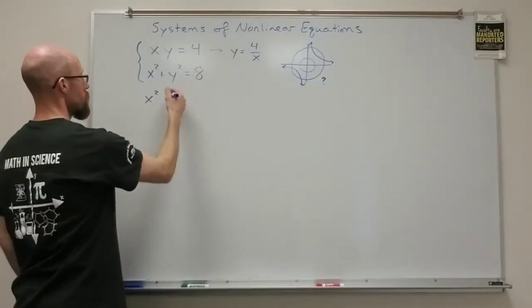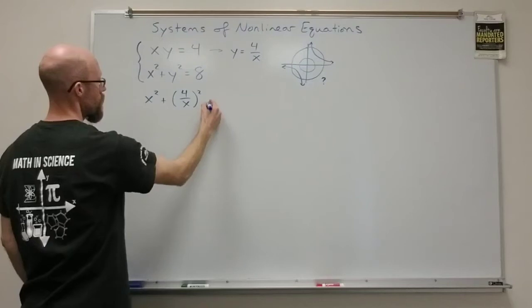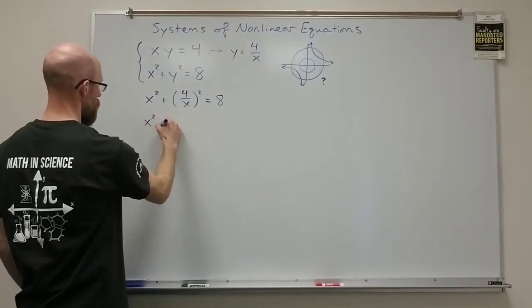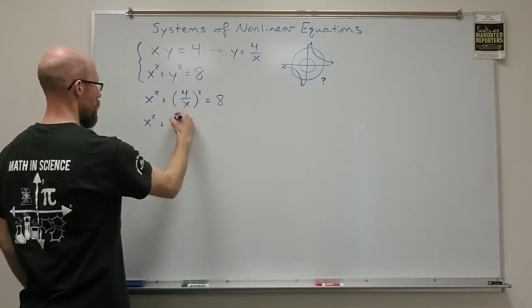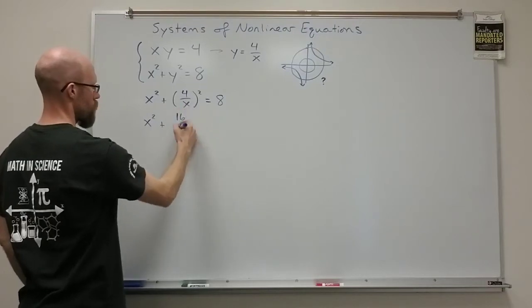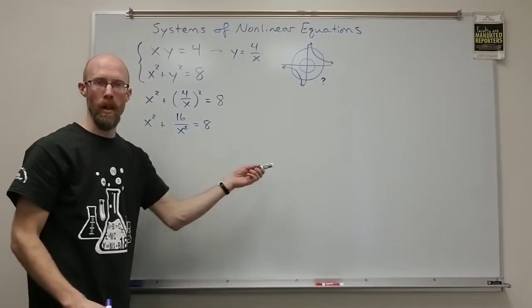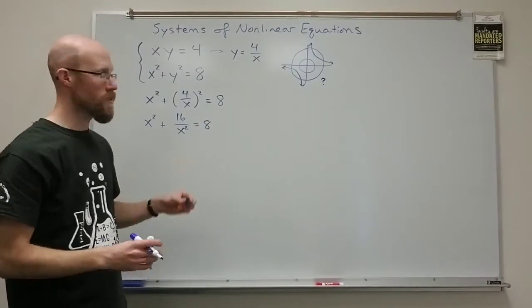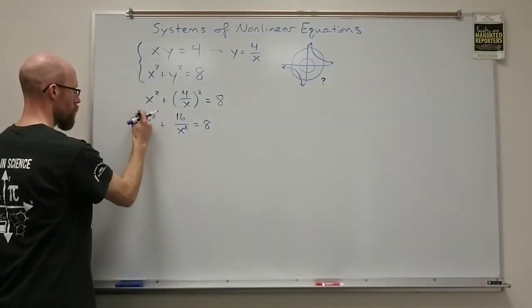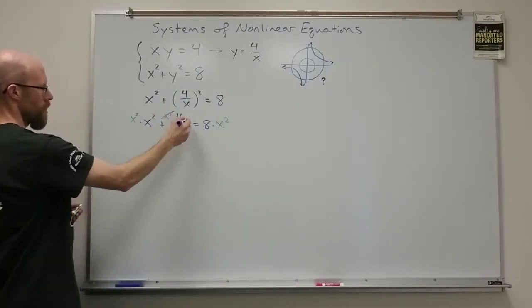So, I'm going to use substitution. I get x squared plus the y becomes 4 over x all squared. If I square that term, x squared plus 4 squared is 16, the x squared is x squared. And then to get rid of the denominator there, I'm going to multiply both sides of the equation, essentially all of the terms by x squared. So, multiply by x squared, by x squared, and by x squared. They'll cancel off in that middle term.